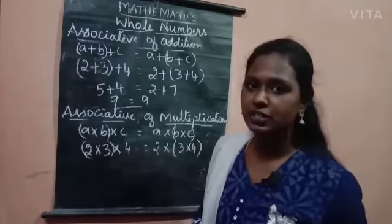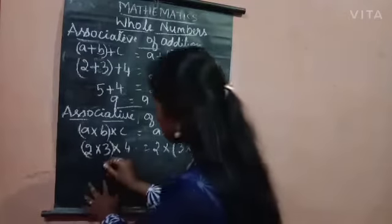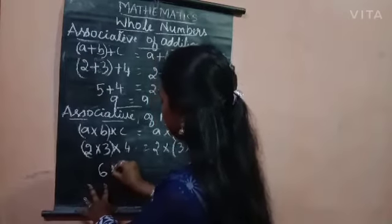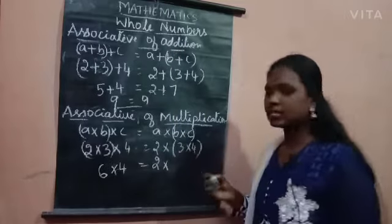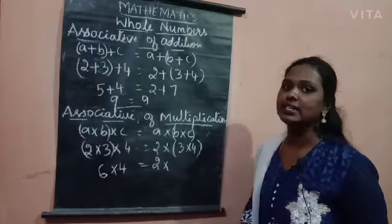2 into 3 is how much? Yes, it is 6. 6 into 4. Again, write 2 as it is. 3 into 4 is how much? It is 12.